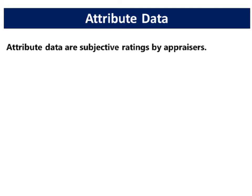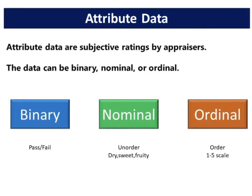Attribute data are subjective ratings by appraisers. The data can be binary, nominal, or ordinal. A binary variable is a categorical variable having two categories such as pass or fail. A nominal variable is a variable with no ordering, such as dry, sweet, and fruity. An ordinal variable is a variable with natural ordering. For example, you can rank the quality of service as one for poor.